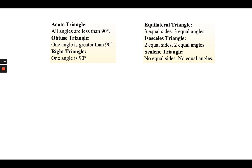Another way to classify a triangle is based on the length of the sides and the angles. If we have three equal sides on a triangle, and that also means the three angles are equal, we have an equilateral triangle. If we have two sides and two angles that are the same, it's an isosceles triangle. And the last one is where no sides or angles are equal — that is a scalene triangle.